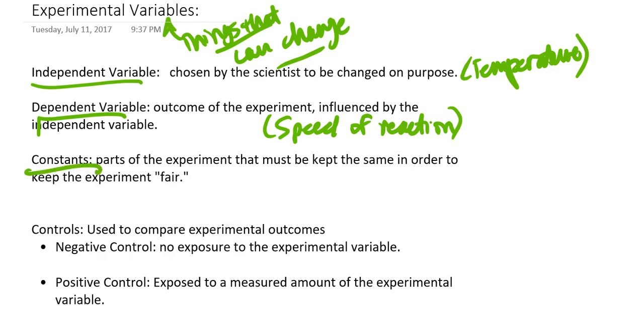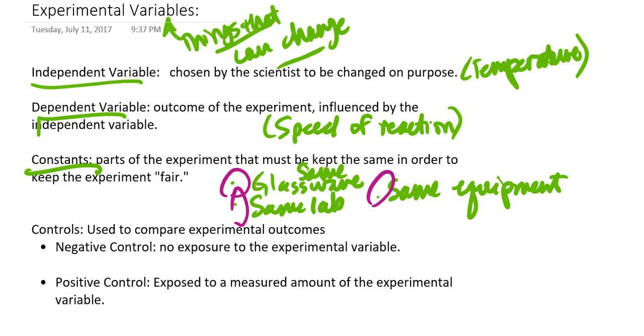Now, constants are parts of the experiment that could change if I let them, but basically, these are things that we don't want to change. So, for example, in my example regarding a chemical reaction, I want to make sure that I use the same glassware, the same lab, same equipment from one trial of the experiment to the next, so that the only thing that's changing is the temperature. Otherwise, if I let all of these other variables change, then that can cause me to have confusing data. And it may not allow me to make the proper conclusions from the experiment.